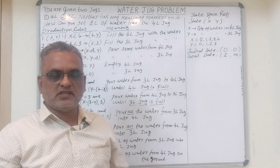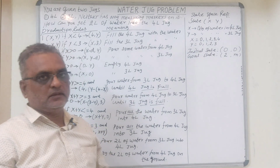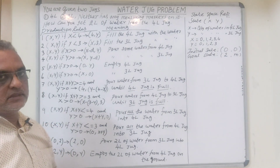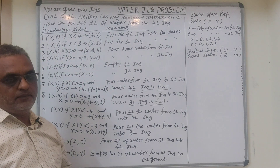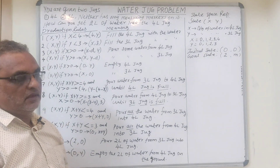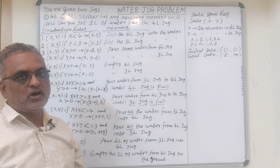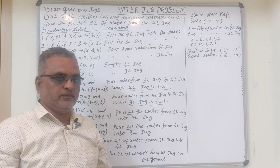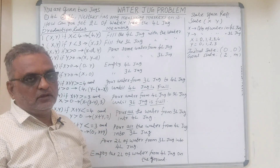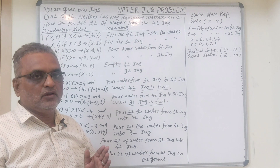Greetings to everyone. In this video we are going to discuss the water jug problem from artificial intelligence. The problem can be stated as: you are given two jugs — one is a 4-litre jug and another is a 3-litre jug. Neither of these jugs has any measuring markers on it. How can you get 2 litres of water into the 4-litre jug? Initially both jugs are empty and you can fill the water with the help of a pump. The required goal state is 2 litres of water available in the 4-litre jug.